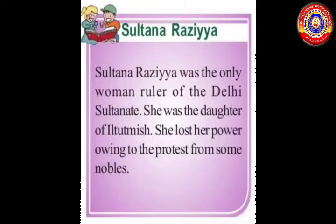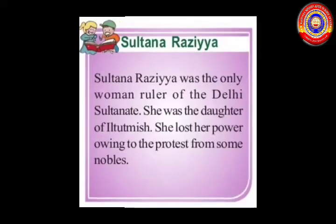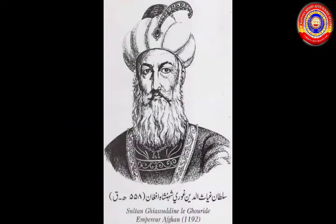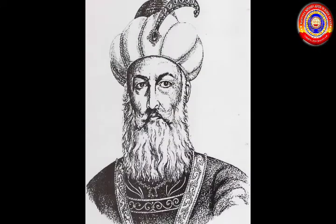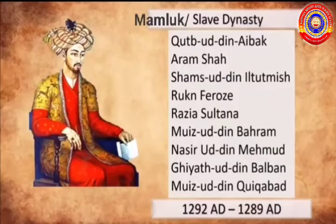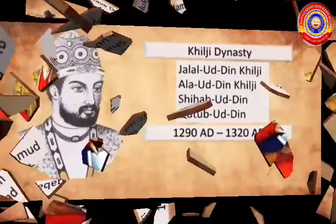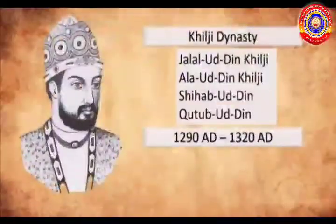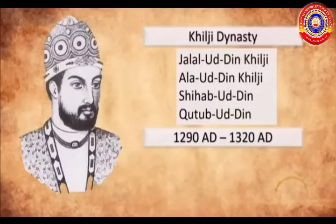Razia was known for being the only woman ruler of Delhi. She lost her power because some nobles protested, as she was a woman — the male-dominated society was against her. Next, Balban was the ruler who resumed power after the reign of Iltutmish.